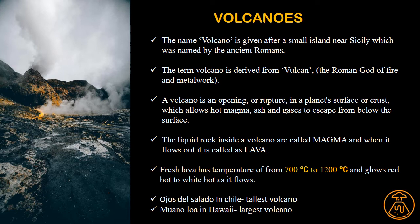The liquid rock inside a volcano is called magma, and when this magma comes out on the earth's surface, it becomes lava. Fresh lava has a temperature ranging from 700°C to 1200°C. The most dangerous volcanic eruption recorded is the eruption of Mount St. Helens in Washington. The tallest volcano in the world is Ojos del Salado in Chile, and the largest is Mauna Loa in Hawaii.